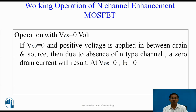Working operation of N-channel Enhancement type MOSFET. When VGS is equal to 0: if we set VGS = 0 and apply a positive voltage between drain and source, in the E-MOSFET there is no connectivity between the source and drain. So there is no movement of charge carriers and the current remains zero. In this mode, the MOSFET operates in the cut-off region.